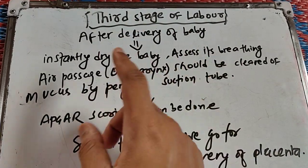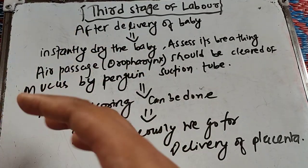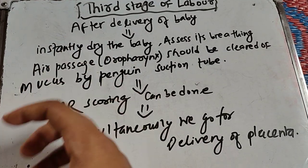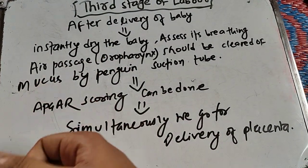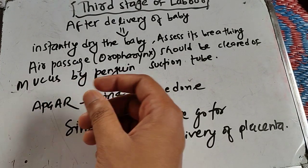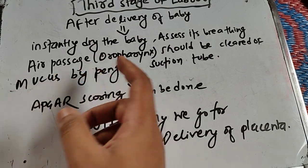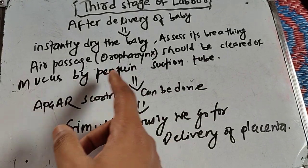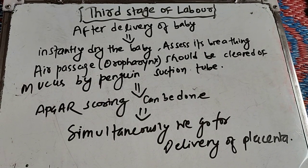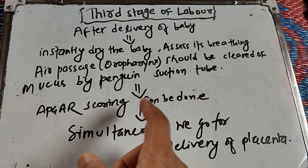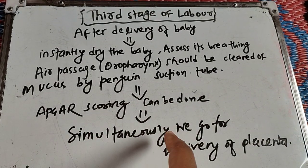After the delivery of the baby, you should immediately dry the baby and assess its breathing — check whether the baby is crying or not. You should also check the air passage, which is the oropharynx. If mucus is present, it can be cleared using a penguin suction tube. After estimating the Apgar score, you can assess the health status of the baby, and simultaneously proceed with delivery of the placenta.